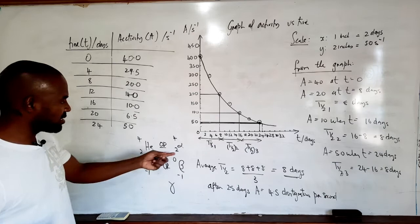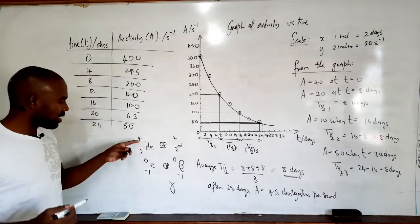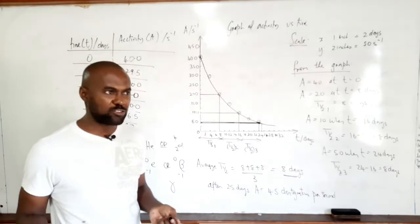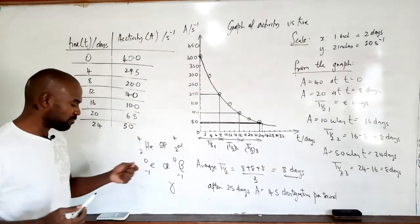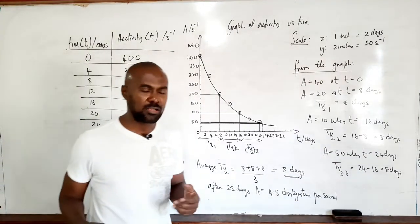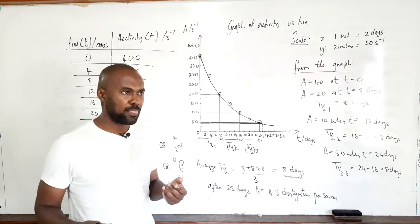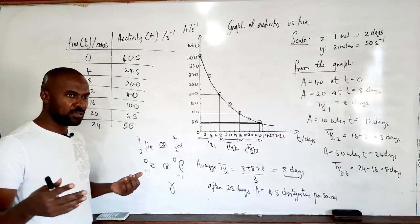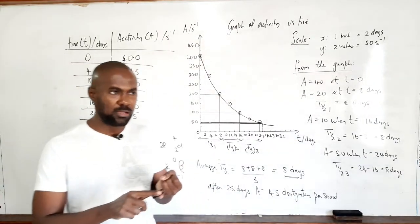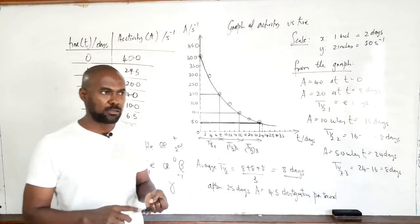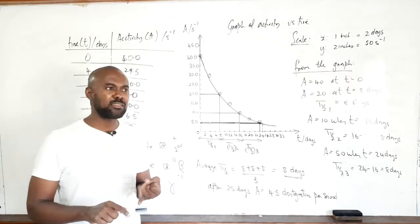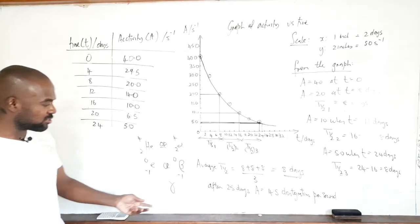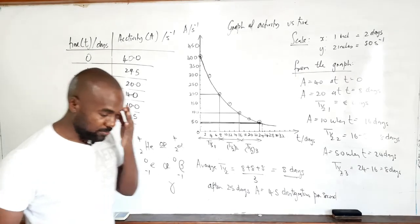Alpha particles are helium nuclei with two protons and two neutrons, giving a mass number of four. Beta particles are fast-moving electrons with a charge of minus one. Gamma rays are very short wavelength electromagnetic radiation — recalling the electromagnetic spectrum: gamma, X-rays, ultraviolet, visible, infrared, microwaves, and radio waves.